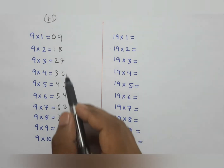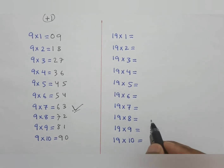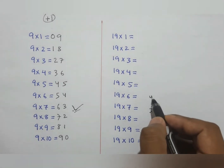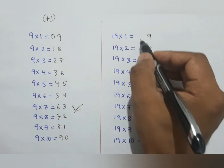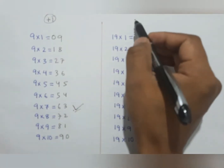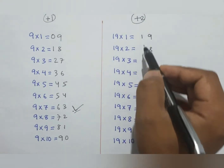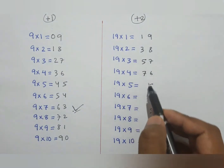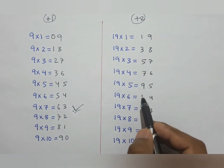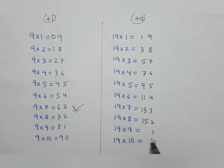So the left-side numbers start from 1 and we add plus 2 each time: 1, 3, 5, 7, 9, 11, 13, 15, 17, 19. The right side is always 0 through 9 as before.